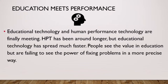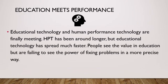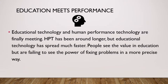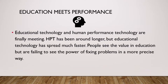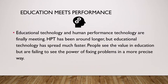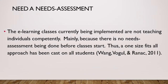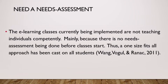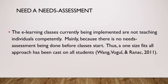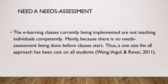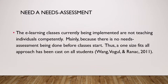Educational technology and human performance technology are finally meeting. HPT has been around longer, but educational technology has spread much faster. People see the value in education, but are failing to see the power of fixing problems in a more precise way, and they are also not seeing the link between educational tech and human performance tech. The e-learning classes currently being implemented are not teaching individuals competently, mainly because there is no needs assessment being done before classes start — thus, a one-size-fits-all approach has been cast on all students. Had the needs and learning gap of these individuals been considered before mandated training, more productive and precise training methods could have been utilized. (Wang, Vogel, & Rannick, 2011)